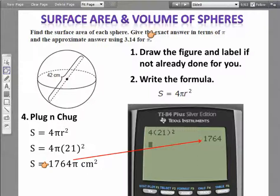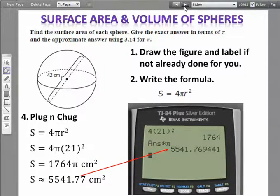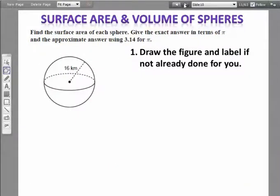Now, if I'm going to do the approximate answer, I'm going to take that 1764 and multiply it by pi. This will be my approximate answer: 5541.77 centimeters squared.